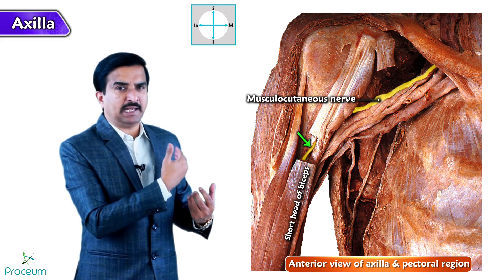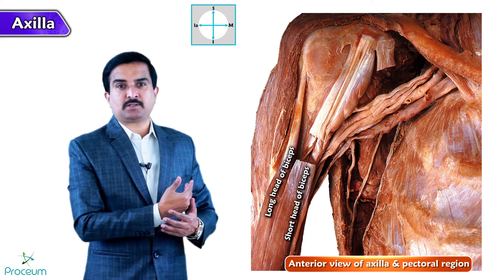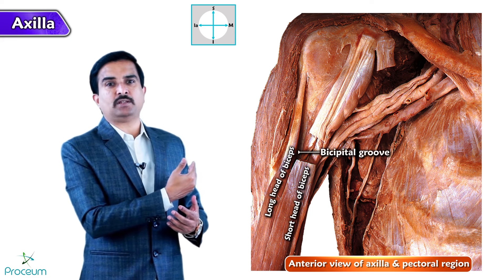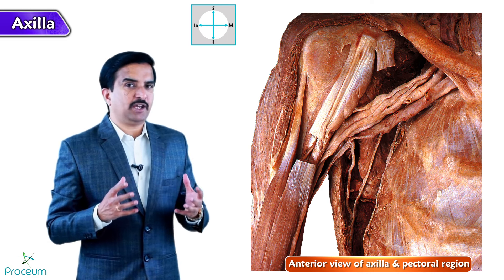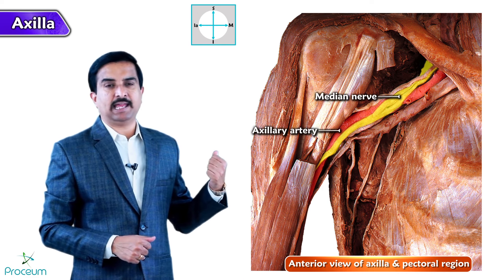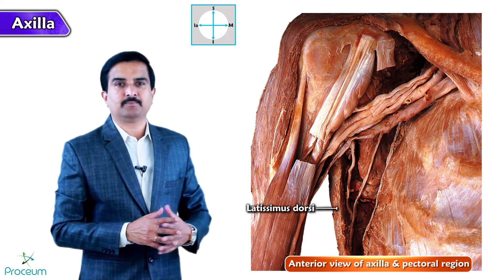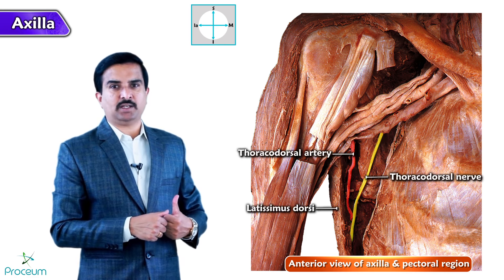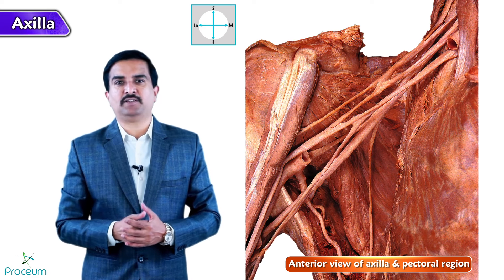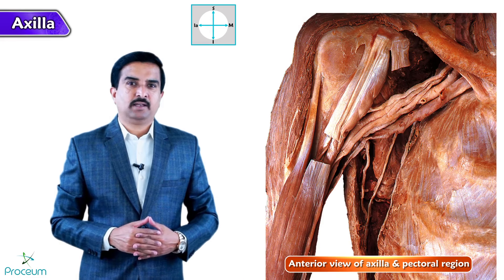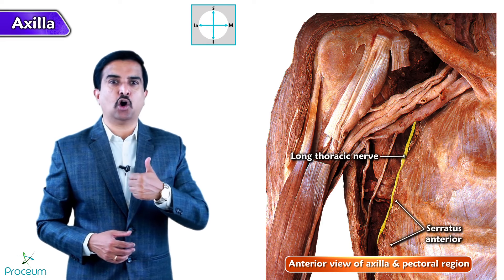The short head of the biceps is partially cut to expose the musculocutaneous nerve. The long head of the biceps lies in the bicipital groove and joins with the short head to form the main biceps brachii muscle. The formation of the median nerve is clearly observed overlying the axillary artery. The muscle on the posterior aspect is the latissimus dorsi, and the thoracodorsal nerve and artery are well seen supplying it. The subscapularis forms the posterior wall of the axilla, and the serratus anterior is partially seen along with its nerve, the long thoracic nerve.